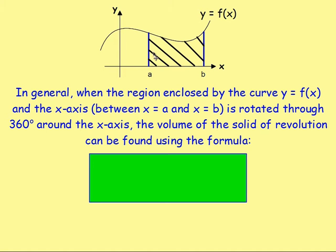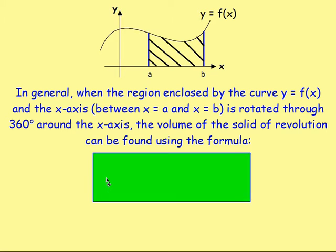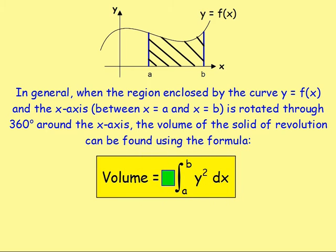Really, if you have an area enclosed between the curve and the x-axis, and if you rotate it around 360 degrees, you end up with a solid of revolution. And you can find its volume using integration. So what you do is you would integrate y squared. So you would take whatever y is equal to and you square it. So you integrate that between a and b. Once you do that, you multiply by pi.